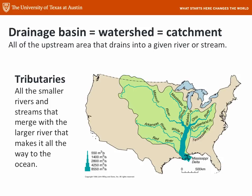Let's have a look at that. This is a drainage basin of the Mississippi River. Another word for that is watershed, and another word you might see is catchment. The definition is simply this: all of the area upstream that drains into a particular given river or stream is part of the drainage basin or the catchment. That means all the tributaries and streams that merge into the larger river are part of that river's drainage basin.